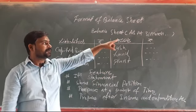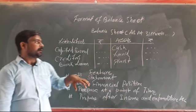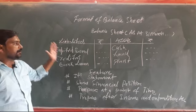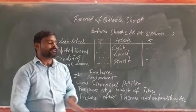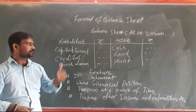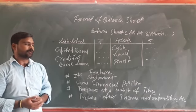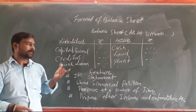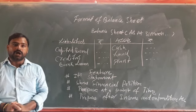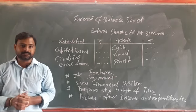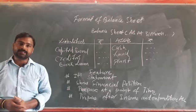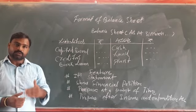Then we write the year. A balance sheet has two sides: the left-hand side is the liability side and the right-hand side shows assets. On the liability side, we show two things: capital fund and liabilities. Outside liabilities are the obligation to pay to a third party, while capital fund represents the obligation toward the firm or organization.